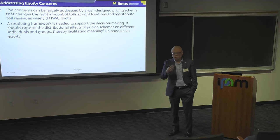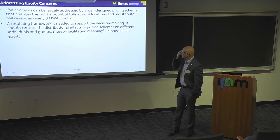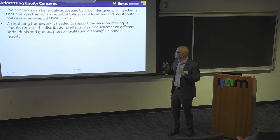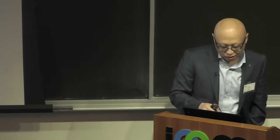I'm going to present this modeling framework, which partially addresses the challenge of having a modeling framework to support decision making. The modeling framework should capture the distributional effect of a pricing scheme across different income individuals and groups, thereby facilitating meaningful discussion on equity. We know that equity is really about whether the distribution is appropriate — there are so many principles, definitions, and ways of categorizing individuals and groups. So we need a working definition.